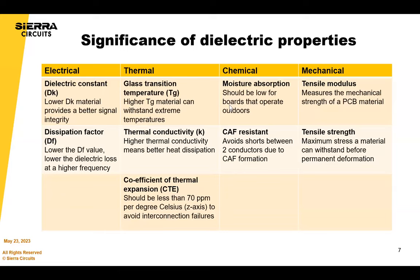Any material you pick must withstand the manufacturing process. Multiple laminations mean multiple thermal excursions. Assembly on top and bottom adds more, as do secondary processes like wave solder. Make sure the material you pick withstands your manufacturing process and delivers the reliability you're looking for. For lead-free, we recommend a higher Tg material — FR-406 should be okay, but 370 HR is always better. Really understand all the thermal excursions your board is going to have to go through.